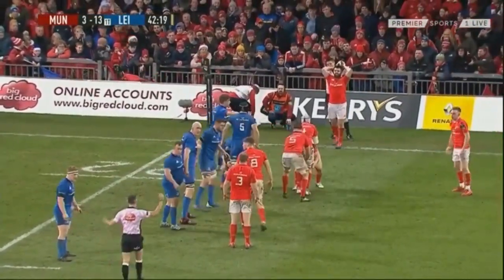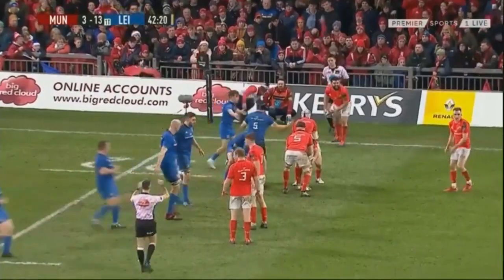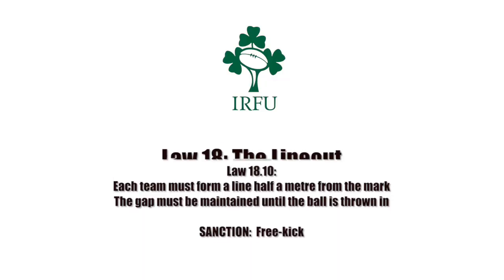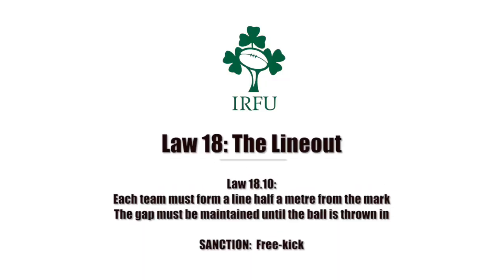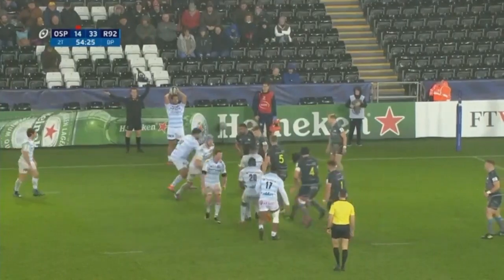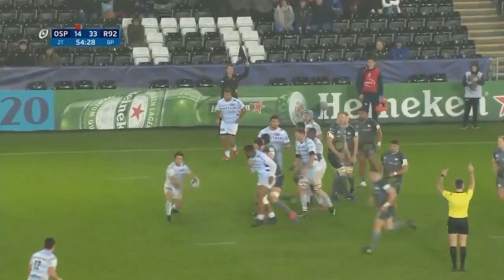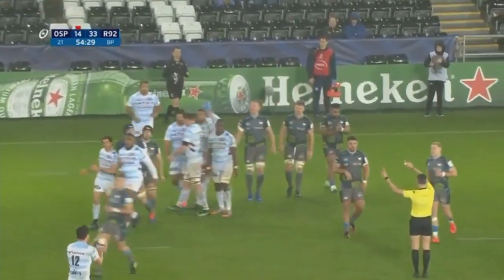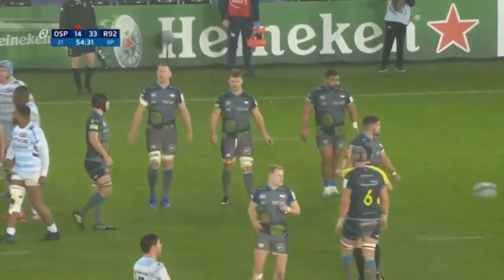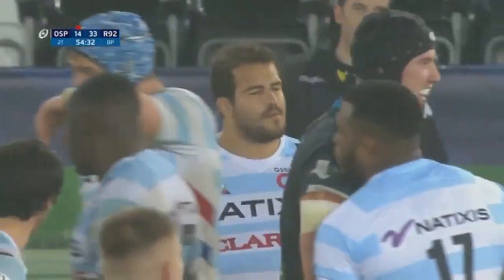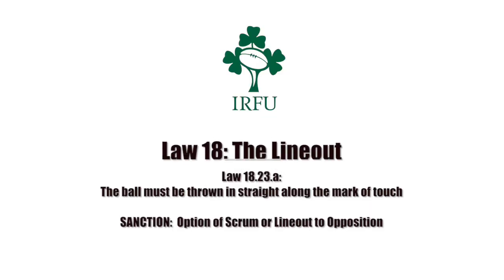In this case we can see the blue team is sanctioned for closing the gap. The line-out commences once the ball is thrown in. To ensure a fair contest, the ball must be thrown in correctly. Here we can see the throw is not straight, resulting in a scrum or line-out option to the opposition.